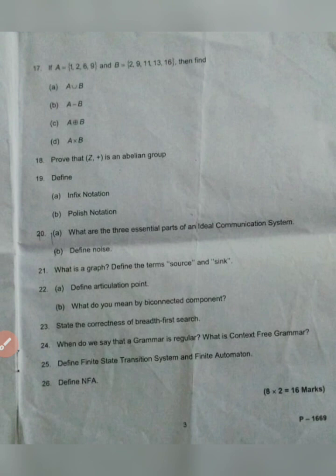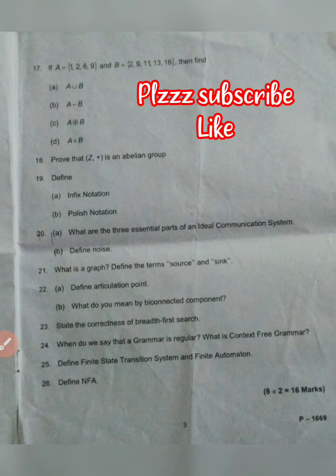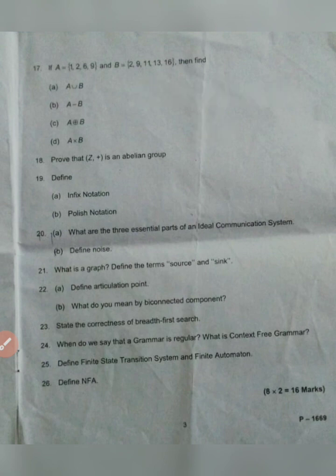What are the three essential parts of a communication system? Define noise. What is a graph? Define the terms source and sink. Define articulation point. What do you mean by bi-connected components?